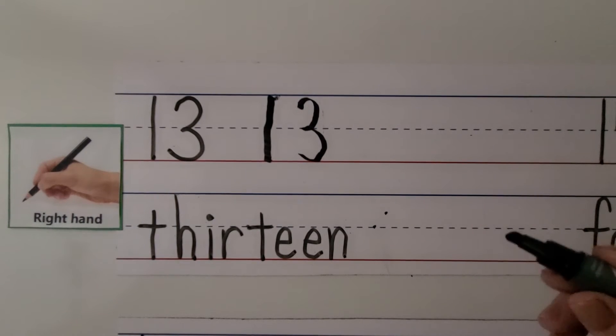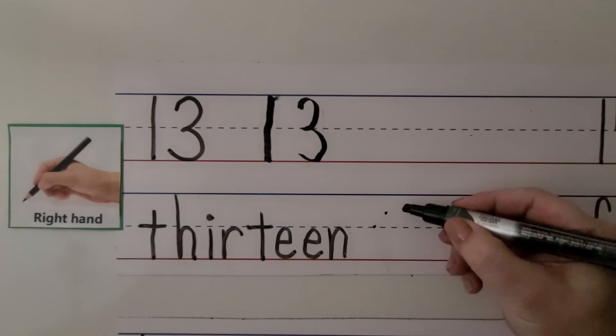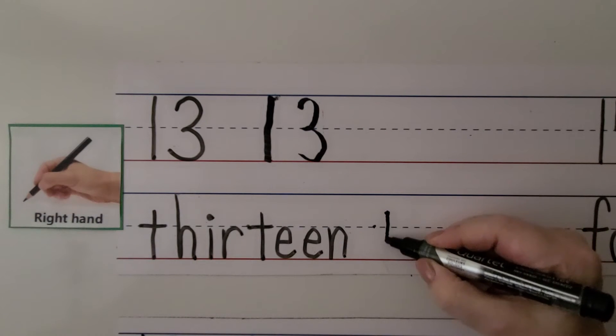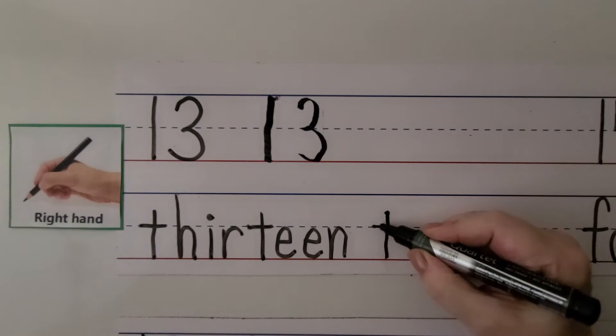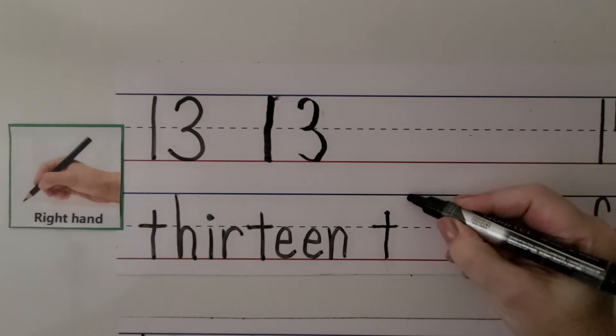We can write the word thirteen with our right hand. We make a T. We cross it from this side. We make an H.